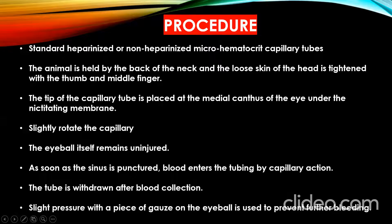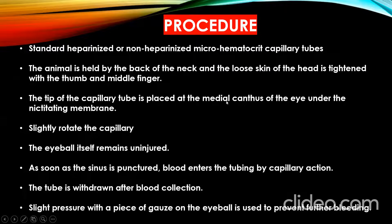Let's see the procedure. For this technique we need heparinized or non-heparinized micro hematocrit capillary tubes. The animal is held by the back of the neck and the loose skin of the head is tightened with the thumb and middle finger so as to get the prominent eyeball. Then the tip of the capillary tube is placed at the medial canthus of the eye under the nictitating membrane.